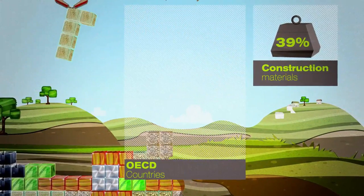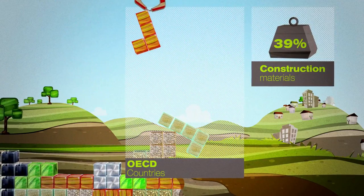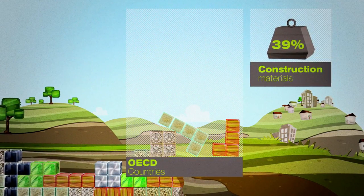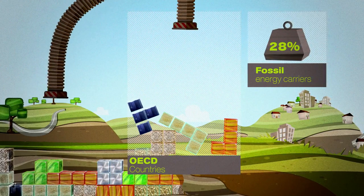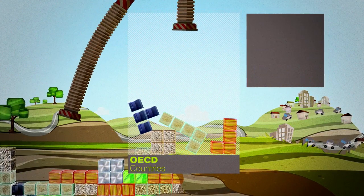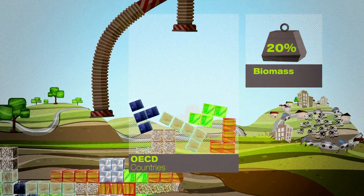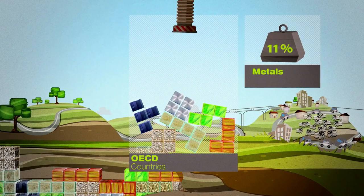Construction materials such as sand and gravel account for the largest share of OECD materials consumption in weight. Next come fossil energy carriers such as oil, coal and natural gas, biomass for food and feed, and metals and metal ores.